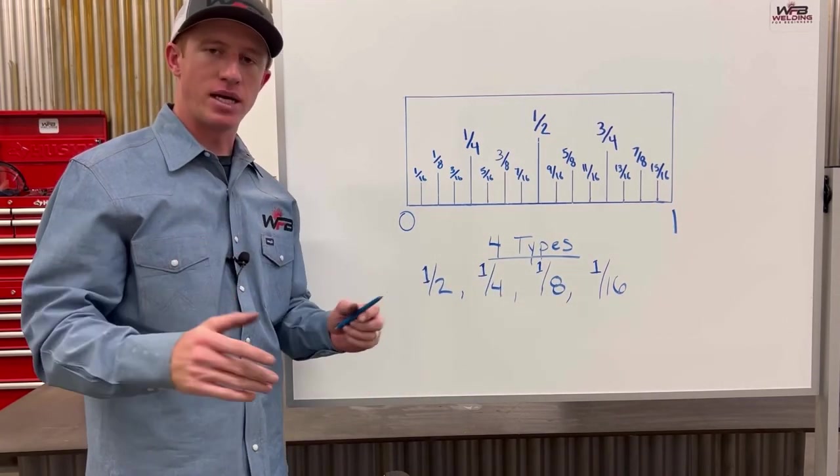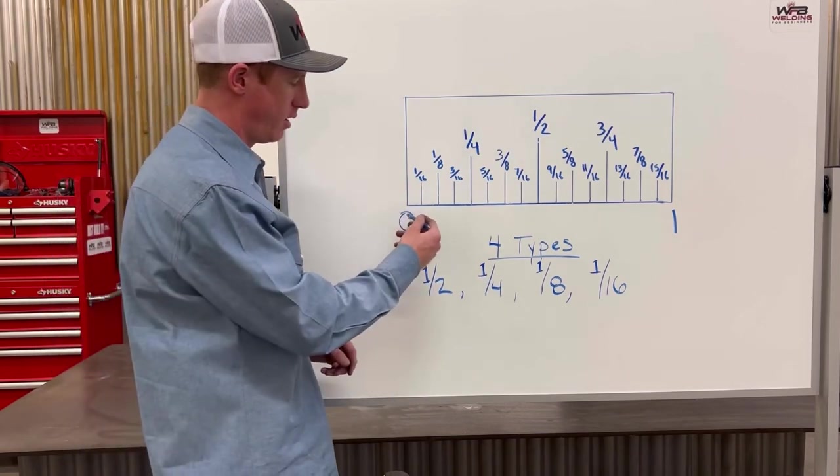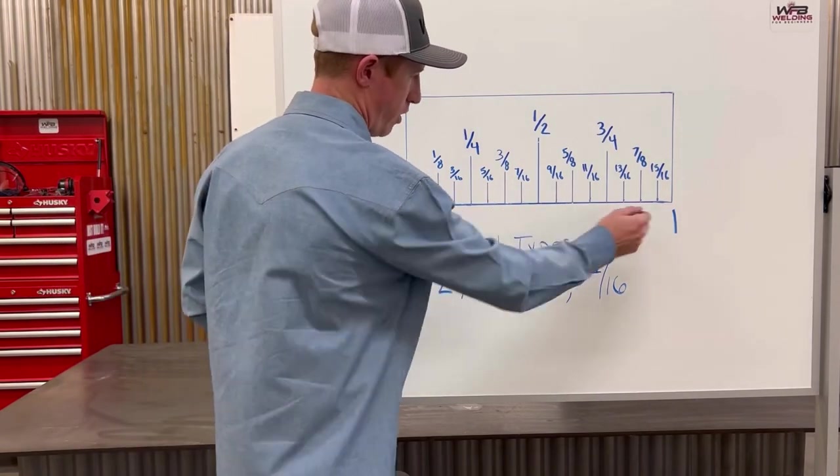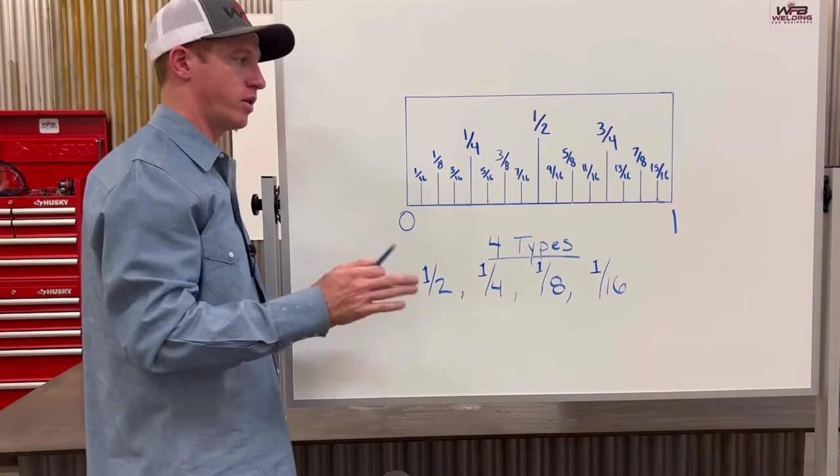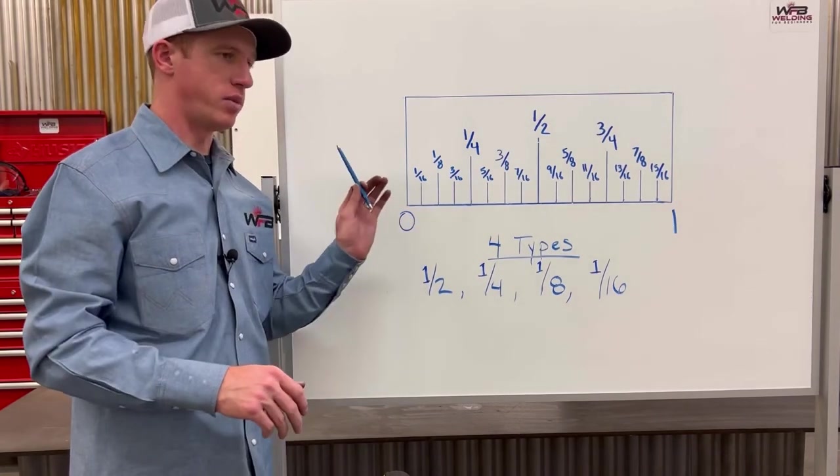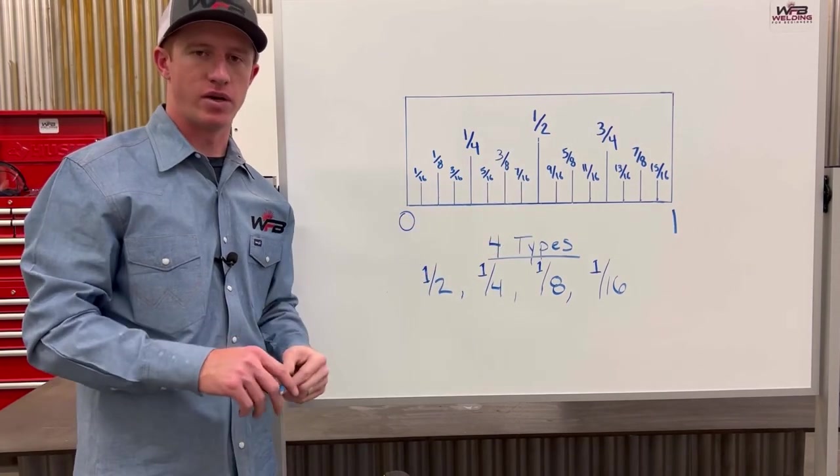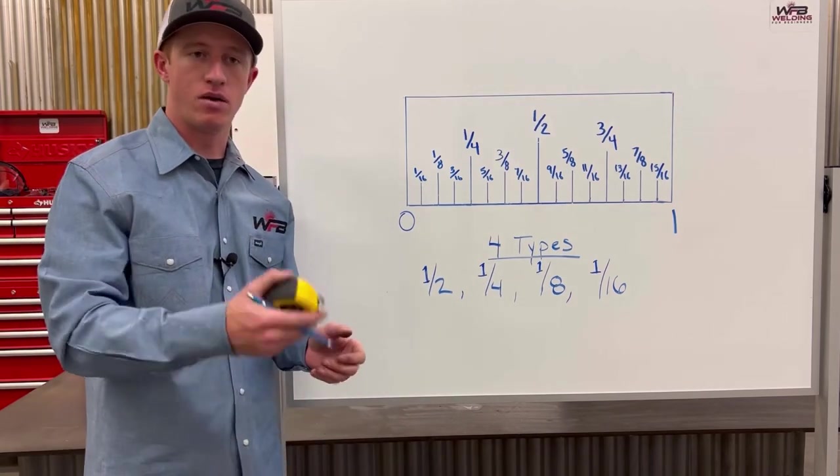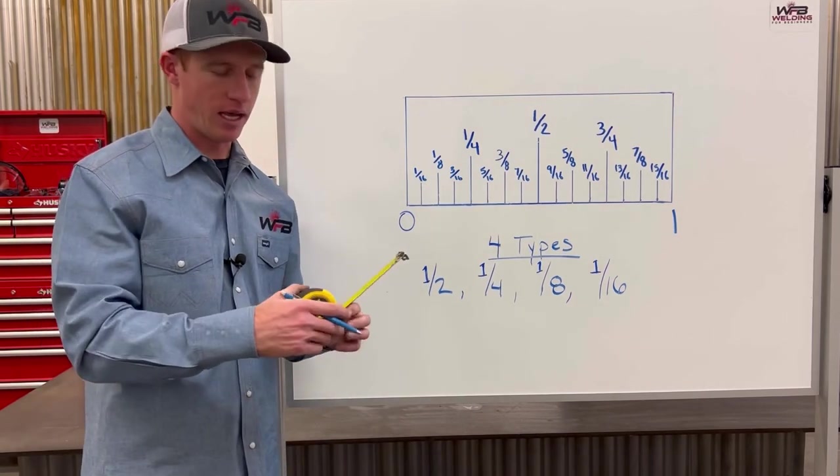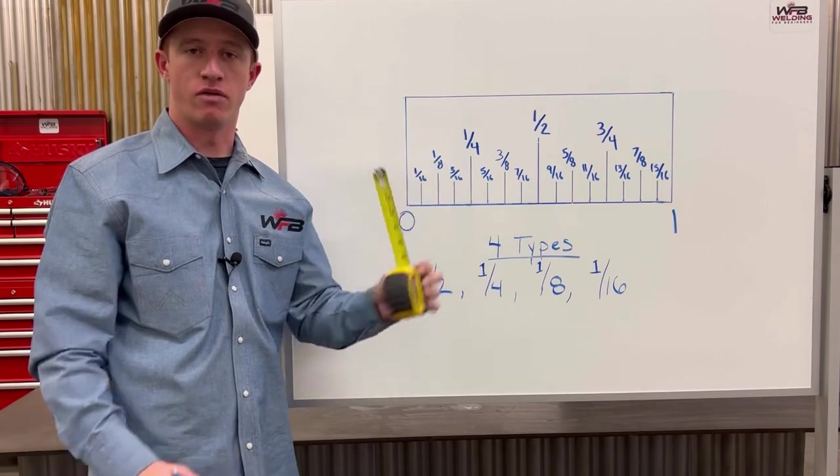So that's a basic breakdown of how to read between zero and one inch. And then if you learn how to do that, you can basically read an entire tape measure very easily. And if you don't want to figure this out, just get a dummy tape measure and you'll have your measurements on there for you.